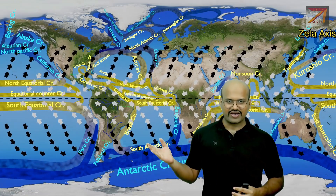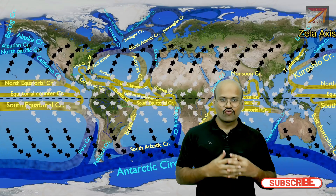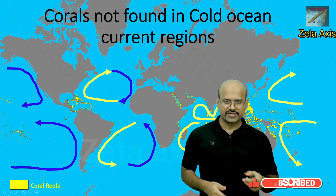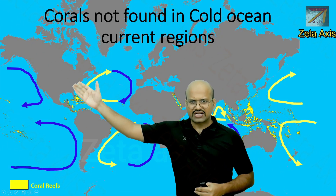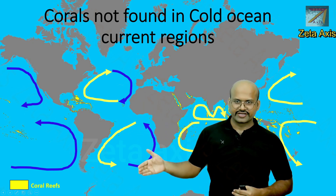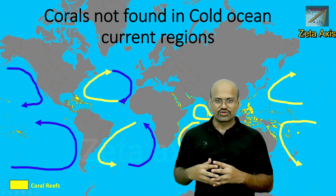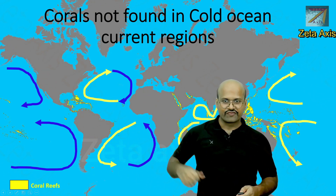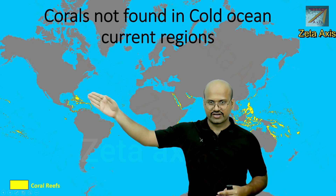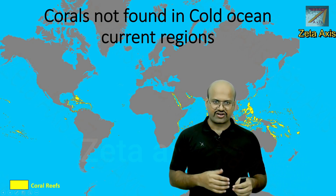Here we can see the circulation of air and ocean water. The yellow color marks warm ocean currents and the blue color marks cold ocean currents. On the eastern margin of continents we see warm ocean currents, while on the western margin we see cold ocean currents. Since corals do not survive in cold water, they are generally found on the eastern margin of continents, including regions around Africa.